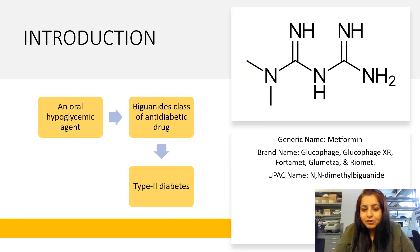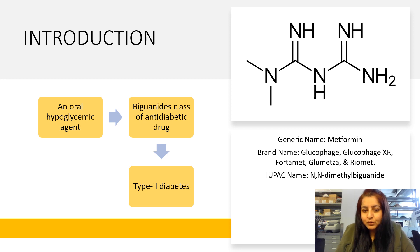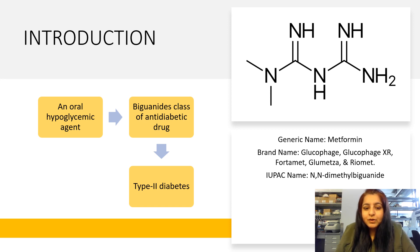Metformin is sold under the brand name Glucophage among others. It is an oral hypoglycemic agent that belongs to the biguanide class of anti-diabetic drugs and is used to treat type 2 diabetes as a first-line agent. As its function indicates, it is involved in maintaining the concentration of glucose in the body.